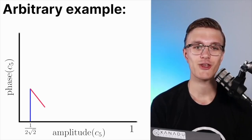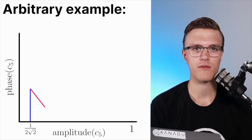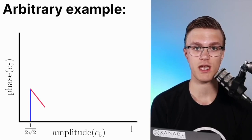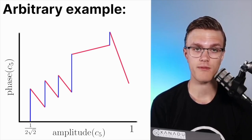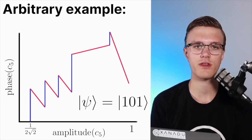Usually if we've picked a good starting state and a good mixer Hamiltonian, time evolving under the mixer Hamiltonian will always change our state in such a way that the 101 state — the solution — gets amplified. Iterating this many times under the proper times, we will eventually get that our solution state has an amplitude of 1, meaning that we've filtered out all the amplitudes of the other states and we're left with just the solution state.